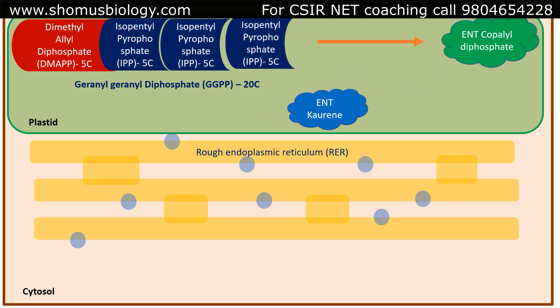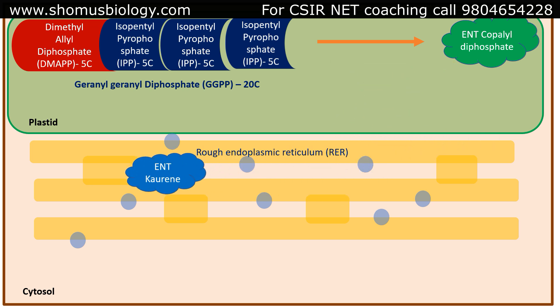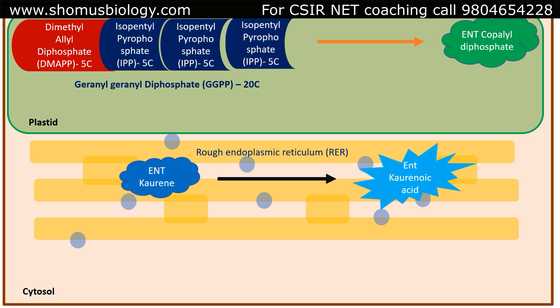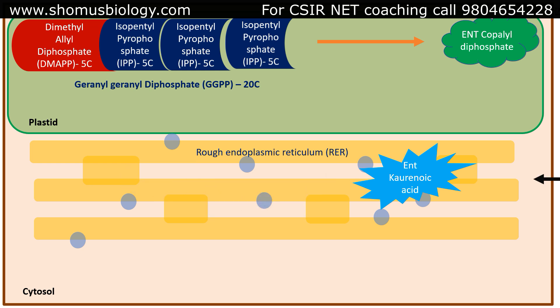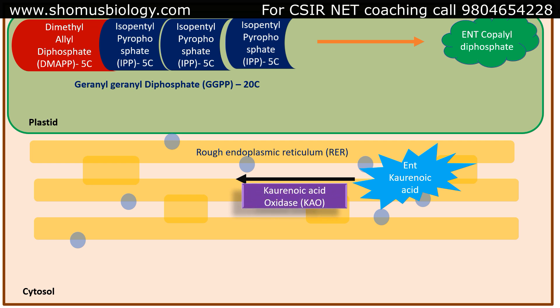ENT-kaurene is then transported into the rough endoplasmic reticulum, where it is converted into ENT-kaurenoic acid by the enzyme kaurene oxidase — a simple oxidation reaction done in the rough ER. This ENT-kaurenoic acid is further oxidized by the enzyme kaurenoic acid oxidase (KAO) into gibberellic acid 12, or GA12, which is the primary source of gibberellins produced by the plant cell.